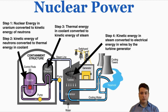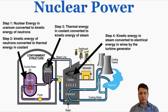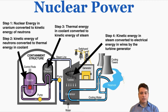The steps of energy conversion in a nuclear power plant are: Step one — nuclear energy in uranium is converted to kinetic energy of neutrons. Step two — kinetic energy of neutrons is converted to thermal energy in the coolant. Both happen inside the reactor. Step three — thermal energy in the coolant is converted to kinetic energy of steam, as the water is heated enough to become steam, which spins a turbine. The turbine is used by a generator to spin a magnet around a coil, creating electricity.